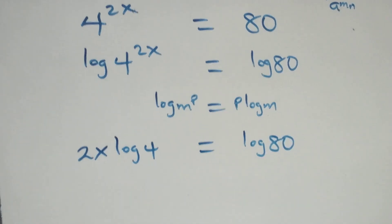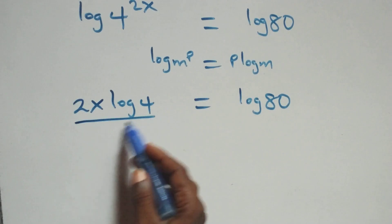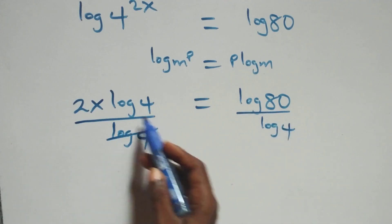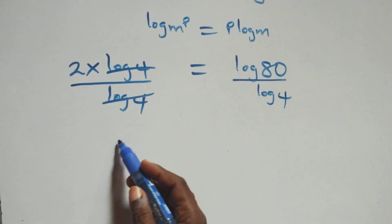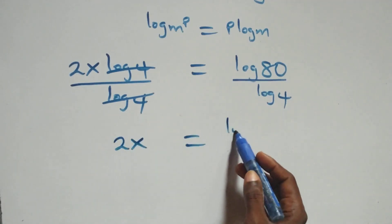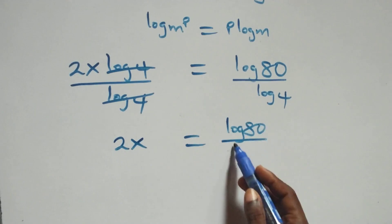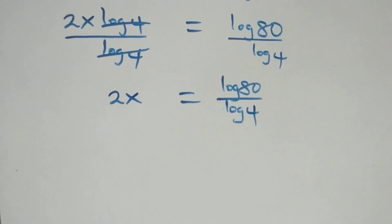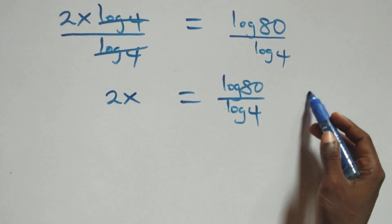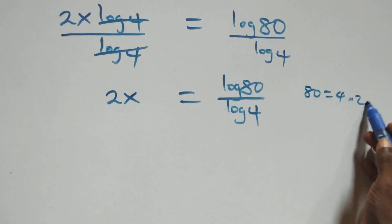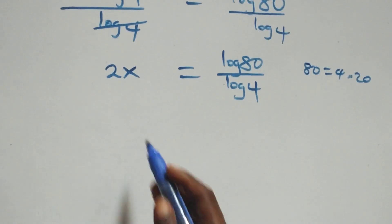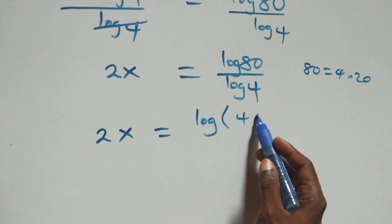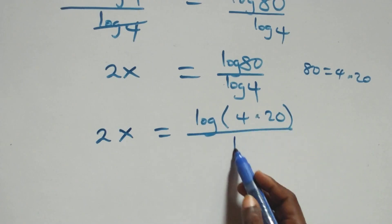The next step: divide both sides by log 4. That is, log 4 cancels each other and we have 2x equals log 80 over log 4. The next step: we can write 80 as 4 times 20. That is, what we have becomes 2x equals log(4 times 20) over log 4.